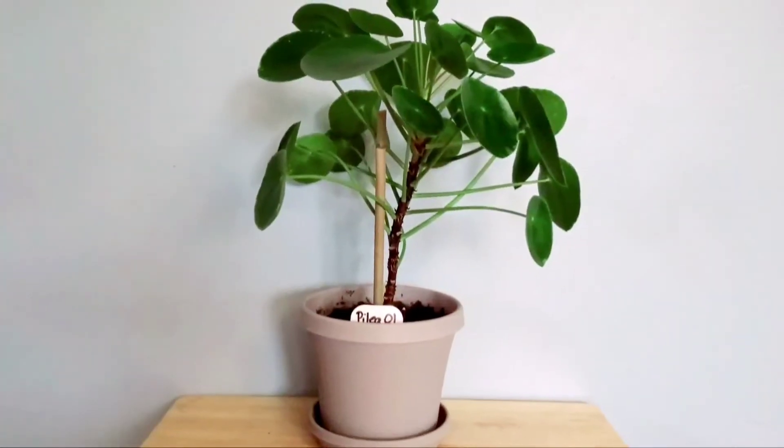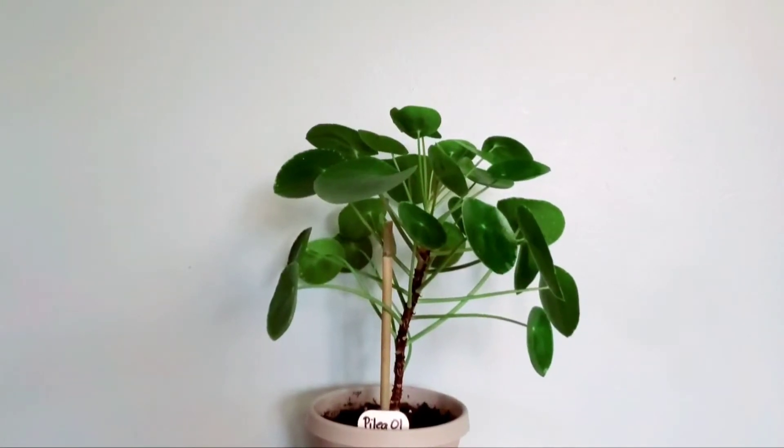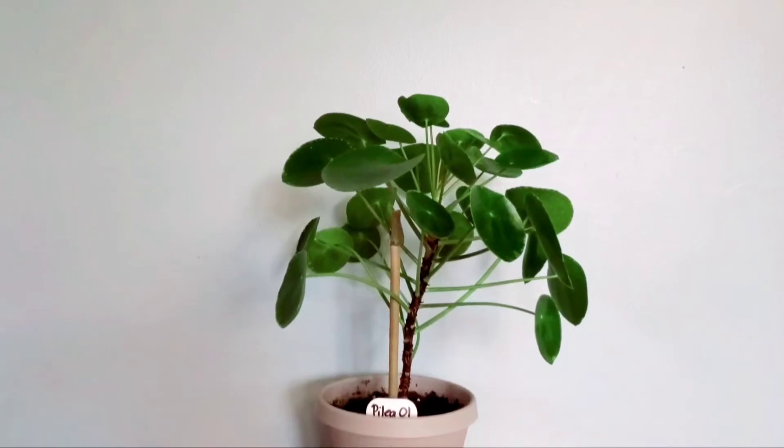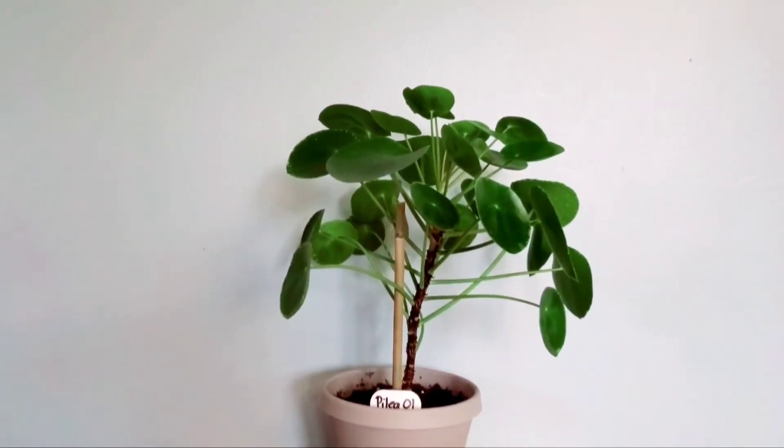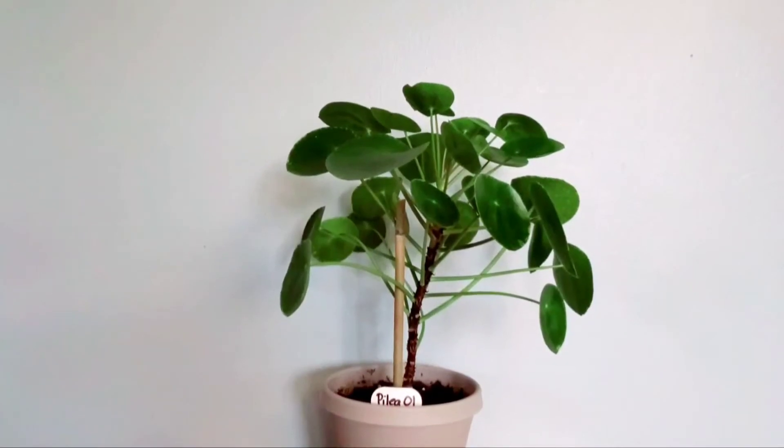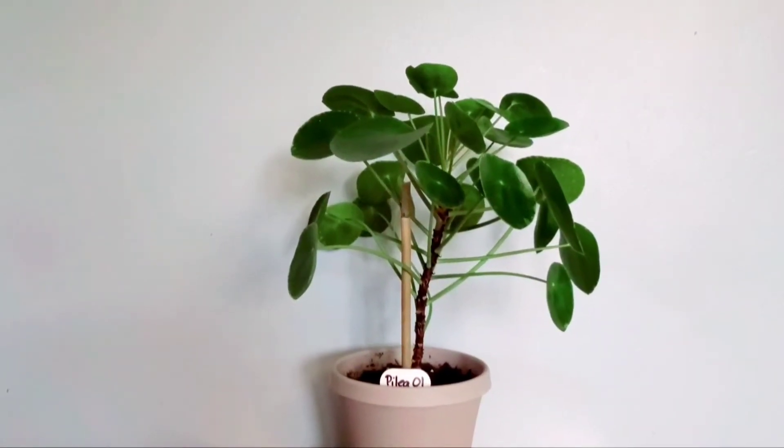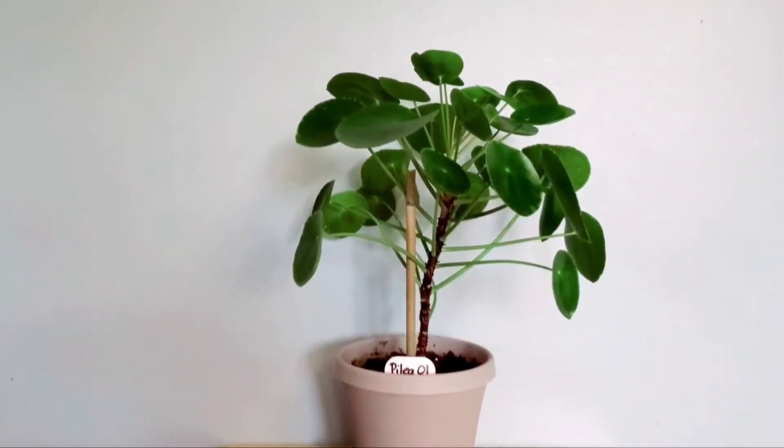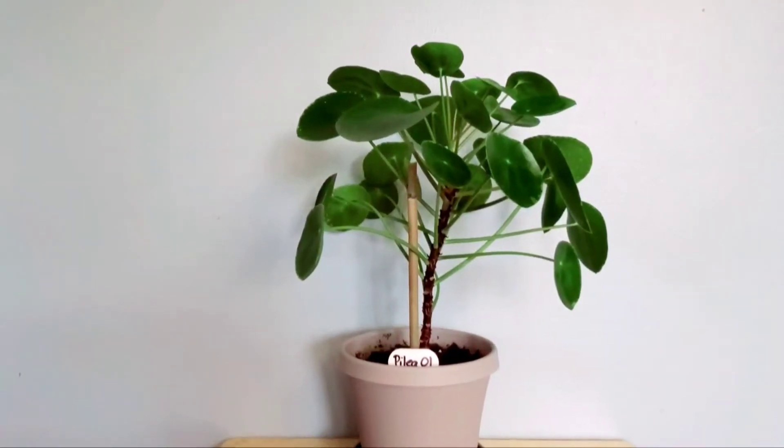She gets watered on a weekly basis, seven to ten days. She sits in a six-inch pot, by the way. On summer and winter, she gets to be watered, and this is due to the fact that I have centralized heat and air. She gets to be watered between seven to ten days depending on how dry she gets.